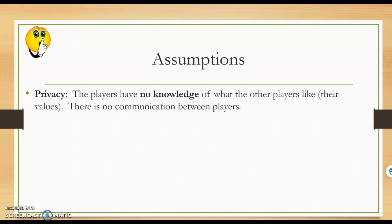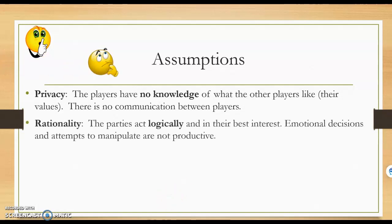Some assumptions we'll make as we work through fair division methods: first, we assume players have no knowledge of what the other players like and there is no communication between players. For example, a brother and sister sharing a cake would typically know each other's preferences, which would violate this privacy assumption. The second assumption is rationality — assuming parties will act logically and in their best interest. If I'm more concerned about you not getting a fair share than about me getting one, that's a violation of the rationality assumption, because I'm not working in my best interest.